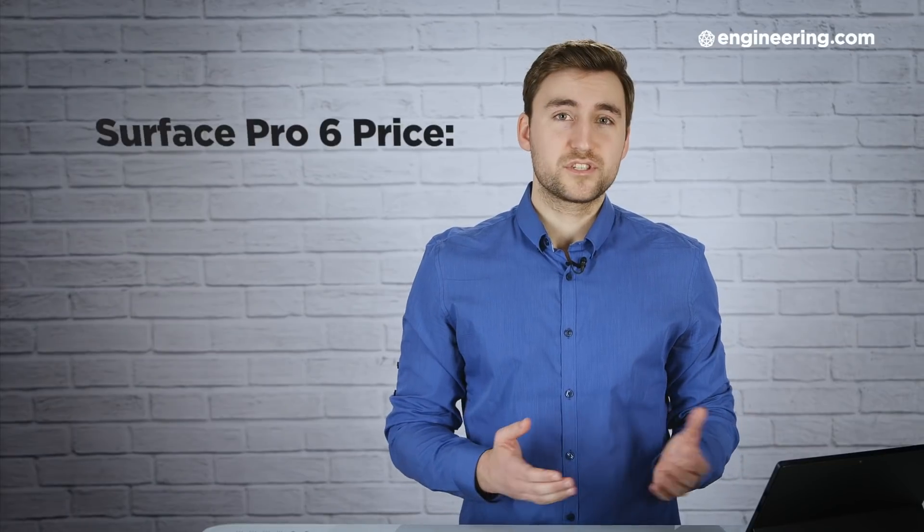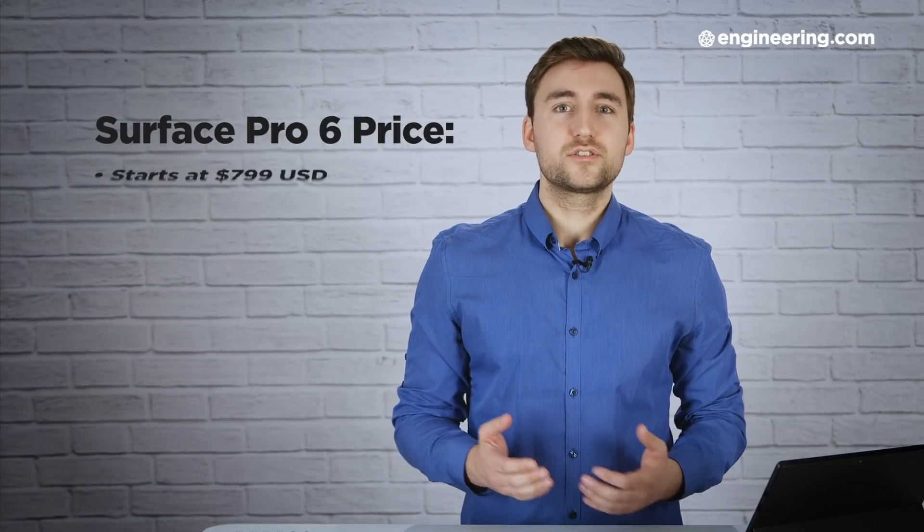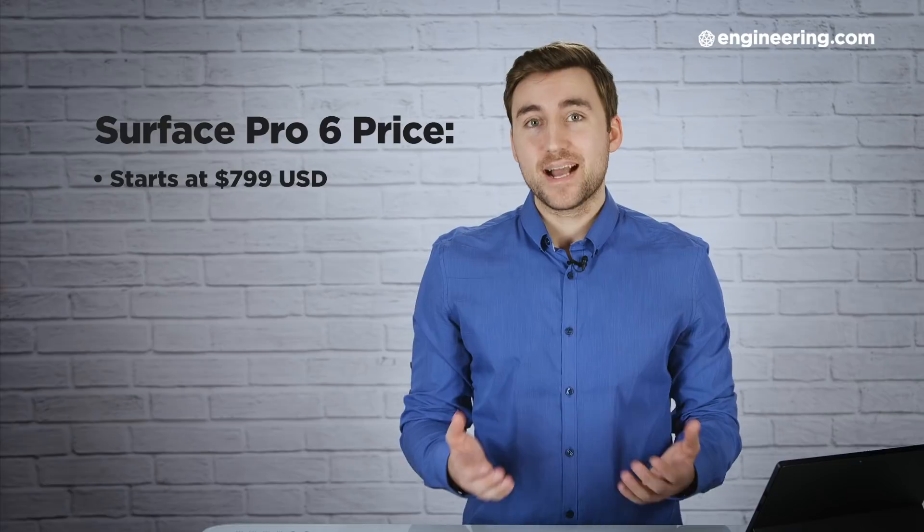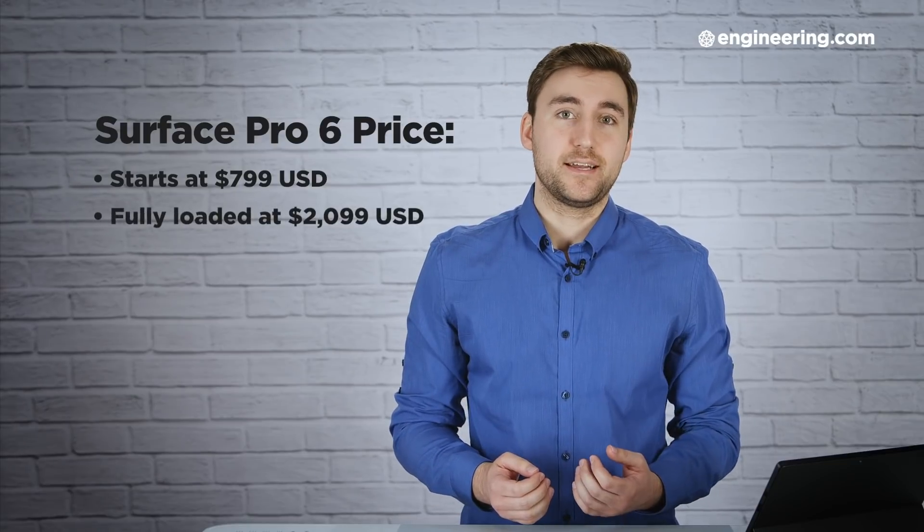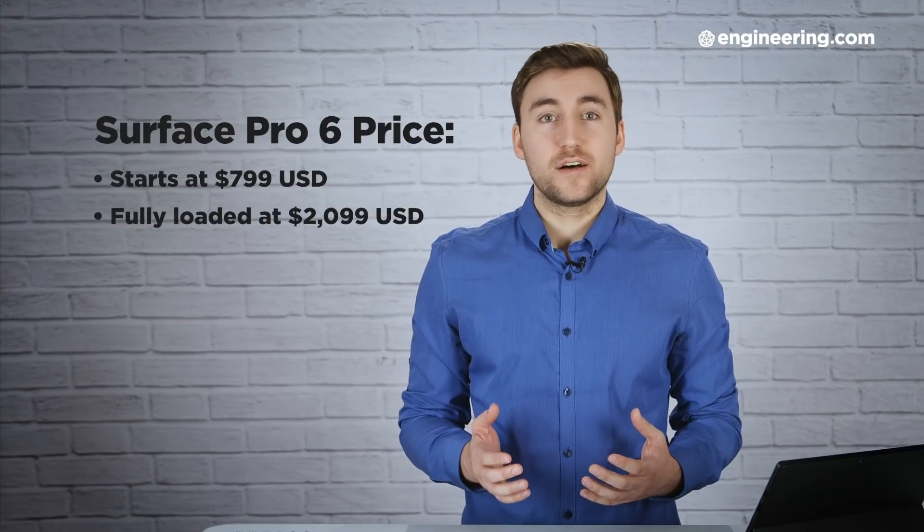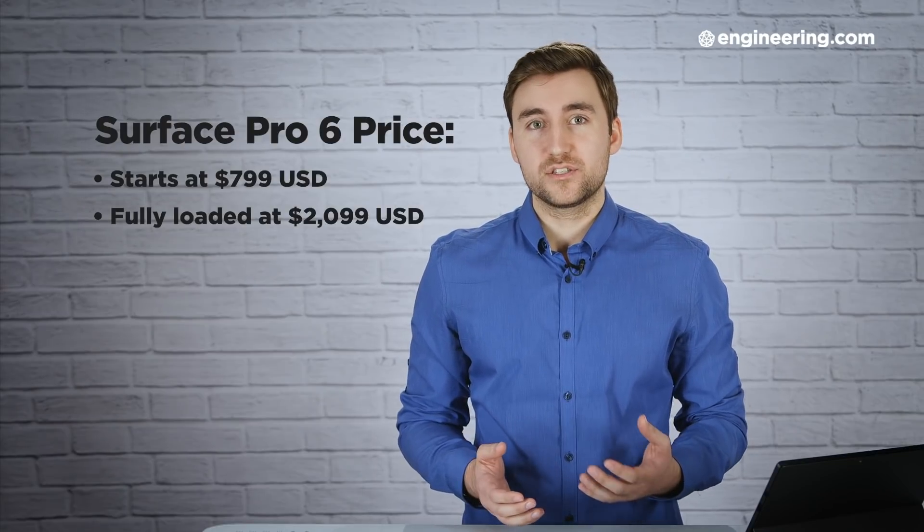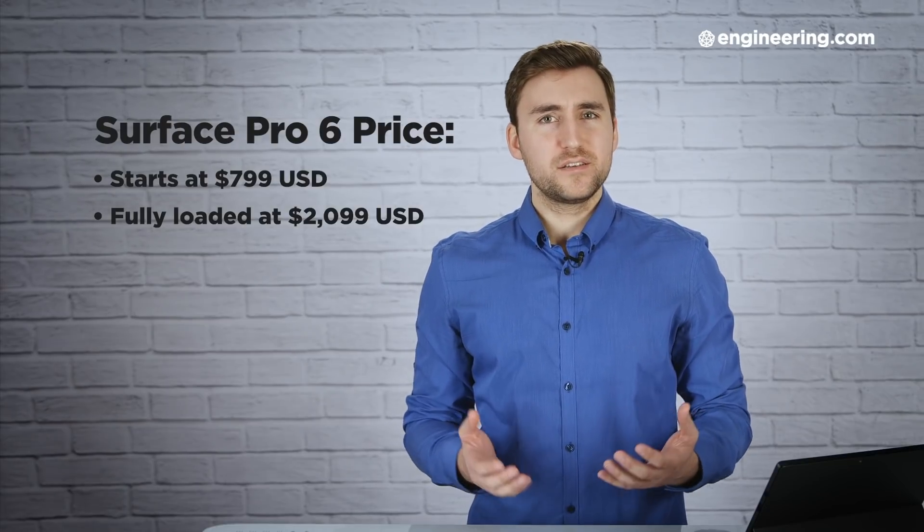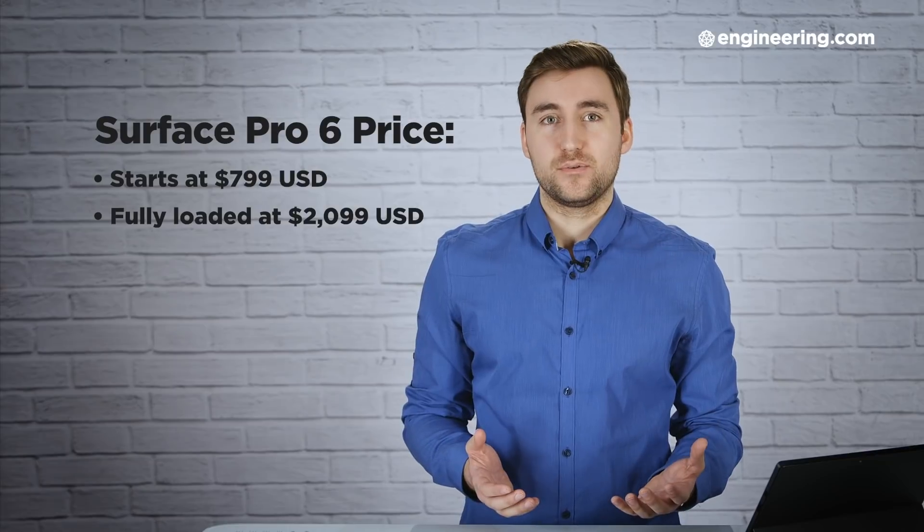So what's the Surface Pro 6 going to cost you? It starts off at $799, and if you max out the specs, you'll pay $2099. That high-end price is around the entry level of some of the more powerful mobile workstations we've reviewed, so the price of the SP6 is actually quite favorable if you're willing to take the hit on ports, display size, and lack of a discrete GPU.